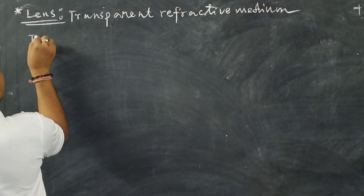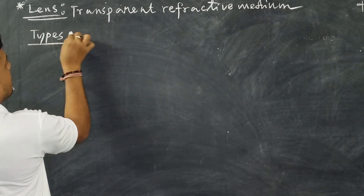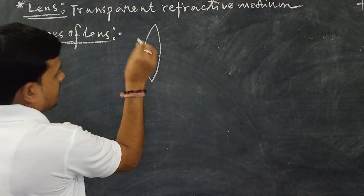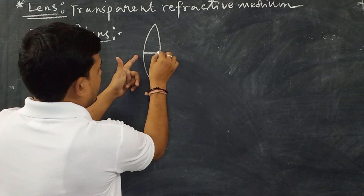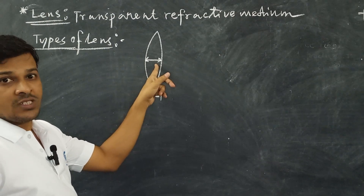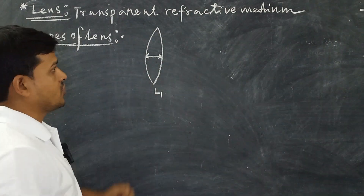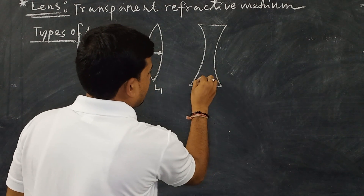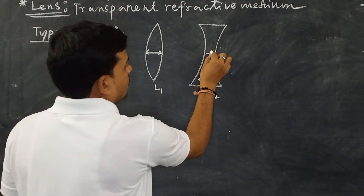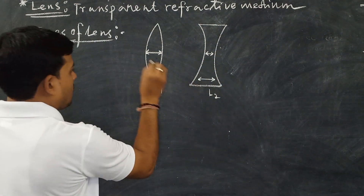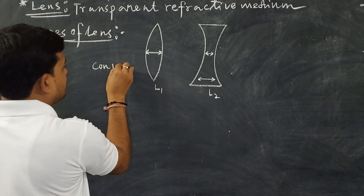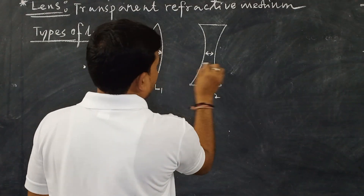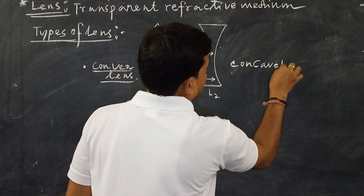There are two basic types of lenses. The first type, L1, is thicker at the middle. The second type, L2, is thicker at the edge. The first one is called the convex lens, and the second one is called the concave lens.